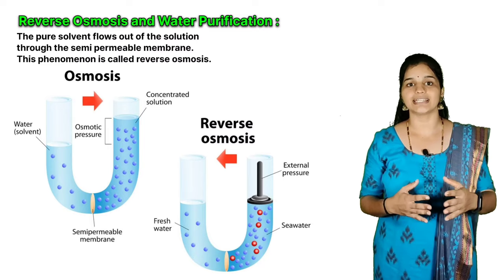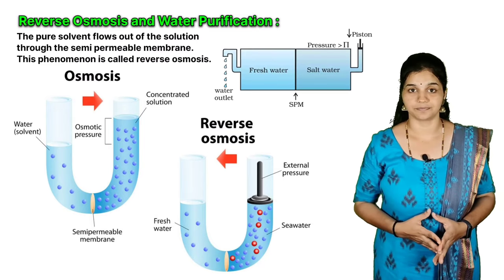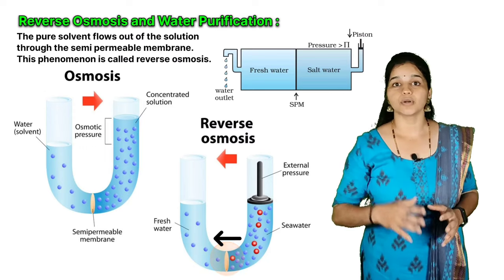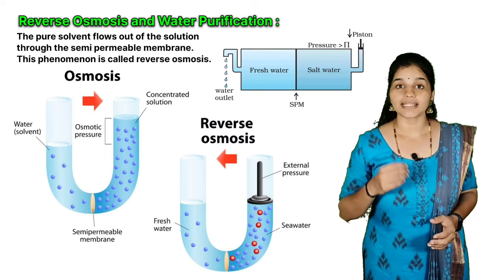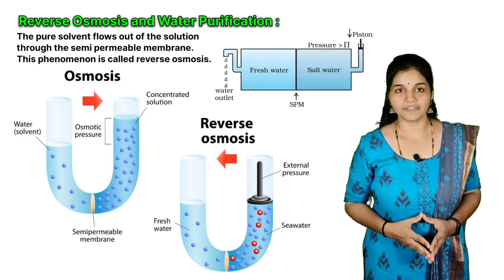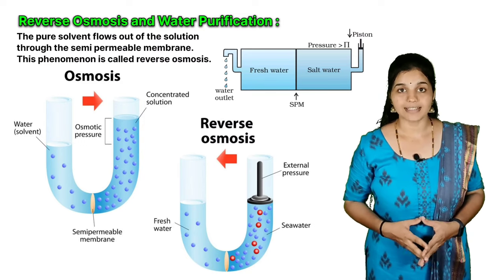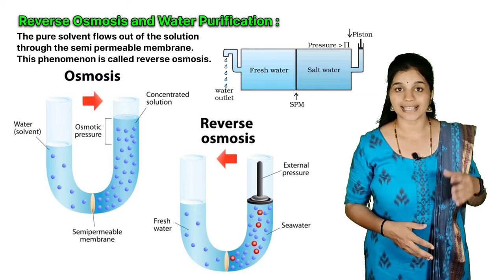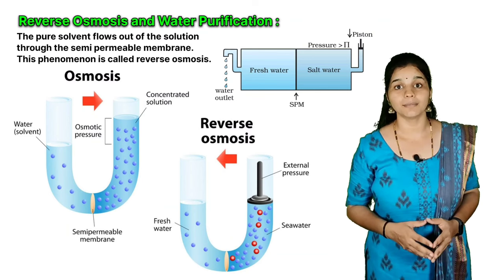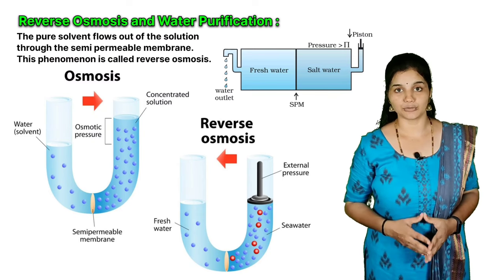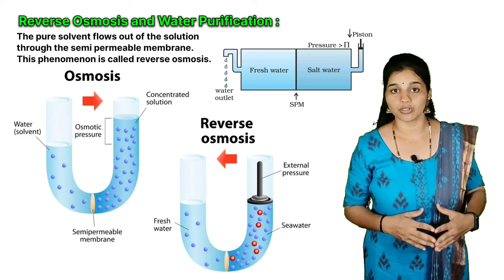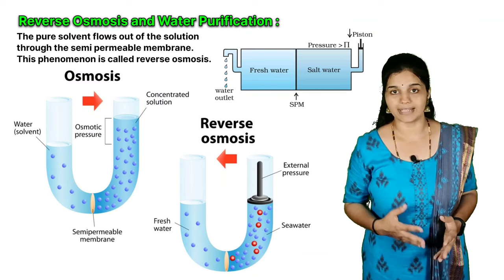Reverse osmosis has great practical utility and is used in desalination of seawater. When pressure greater than osmotic pressure is applied, pure water is squeezed out of seawater through the membrane. A variety of polymer membranes are available for this purpose, including cellulose acetate film placed over a suitable support — cellulose acetate is permeable to water but impermeable to impurities and ions present in seawater. The pressure required for reverse osmosis is quite high, but many countries now use desalination plants to meet potable water requirements.